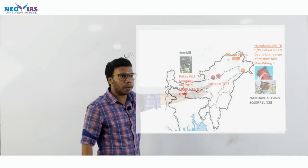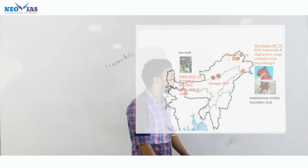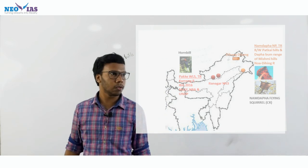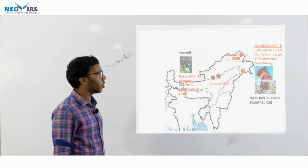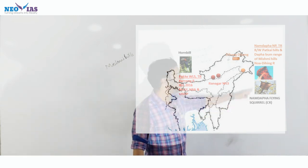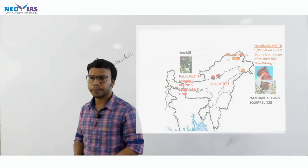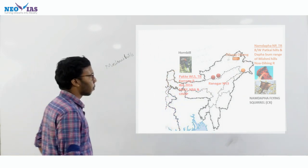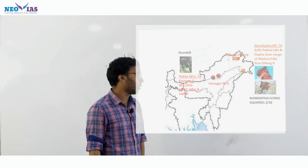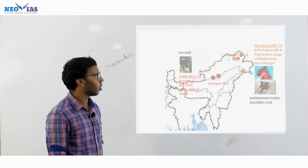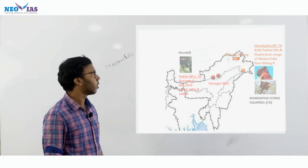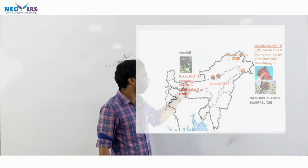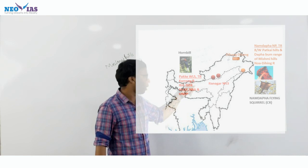In Namdapha National Park, we are having an endemic species called the Namdapha flying squirrel. It is in the critically endangered category and is located in Namdapha National Park. In Arunachal Pradesh, we are also having Pakke — Patkai Hills — and it is also a Tiger Reserve.